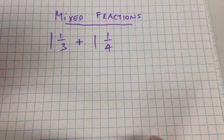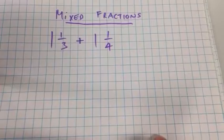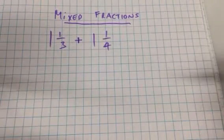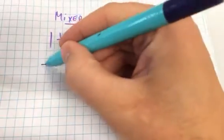Hello and welcome to Maths and Maths. We're continuing our questions on fractions and this time we're looking at mixed fractions. We're going to add one and a third with one and a quarter. They don't have the same denominator, so what do we do?